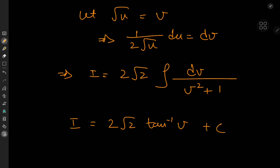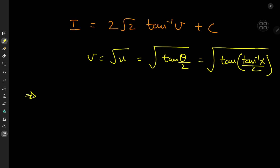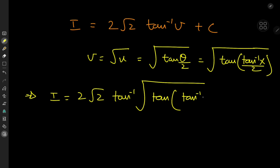We're not done yet because this is an indefinite integral, so we need to work our way back into the x world. The v variable was defined as root u, and u is defined as tangent(θ/2). And what was theta? Well, x equals tangent(theta), so theta is the inverse tangent of x. That means we have root of tangent of inverse tangent(x) divided by 2. So the target integral I is 2 root 2 times the inverse tangent of root tangent of arctan(x) over 2, plus a constant of integration C — one of the coolest forms for an antiderivative I've ever seen. But we can actually simplify this quite nicely.